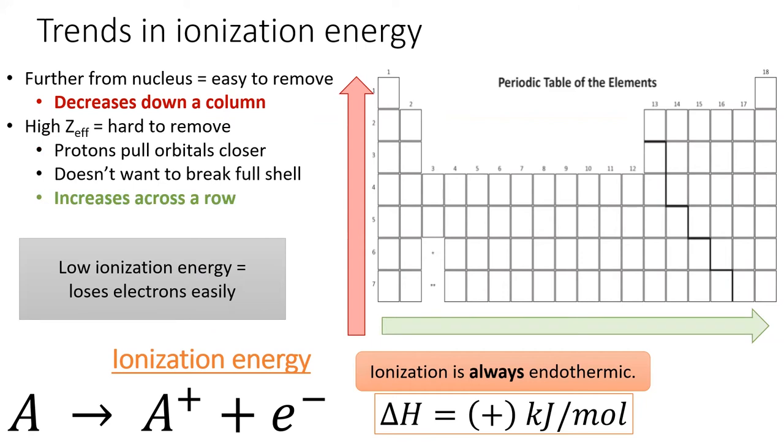As we go to the right across a row, the effective nuclear charge increases, meaning the electrons are held tighter by the atom. There is also a reluctance for atoms to break a full energy level, which further increases ionization energy for some elements, most notably noble gases.